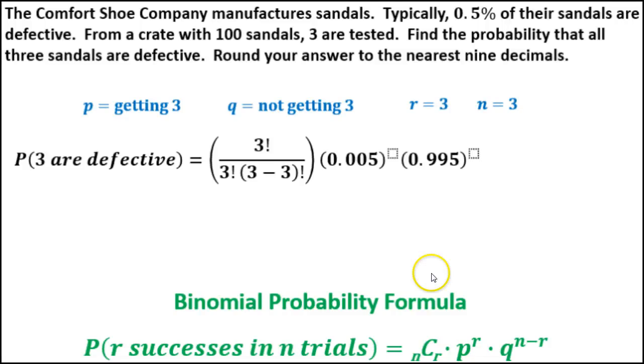The exponent on our defective one would be we want three of those, so that's the number of times that will occur, that will be 3. Then raise the probability of failure, in other words that we don't pick one that's defective, is 3 (the number of trials) minus the number of successes. So this would end up being just a 0.